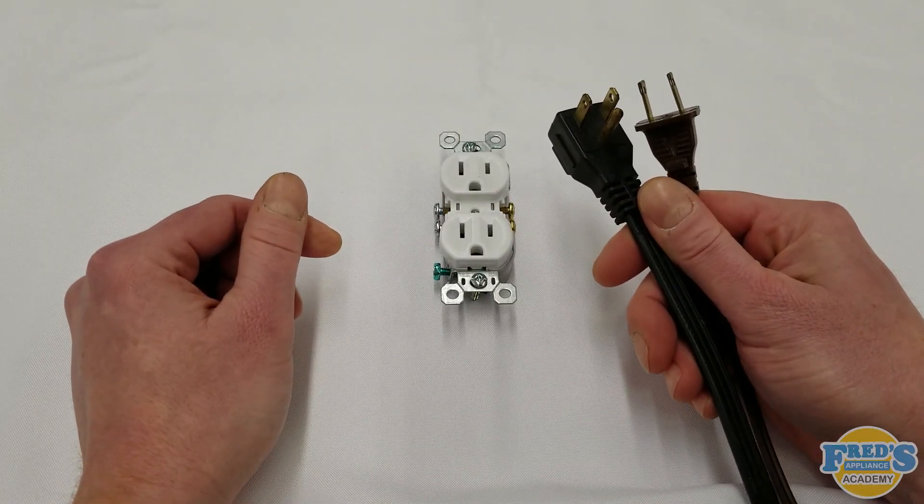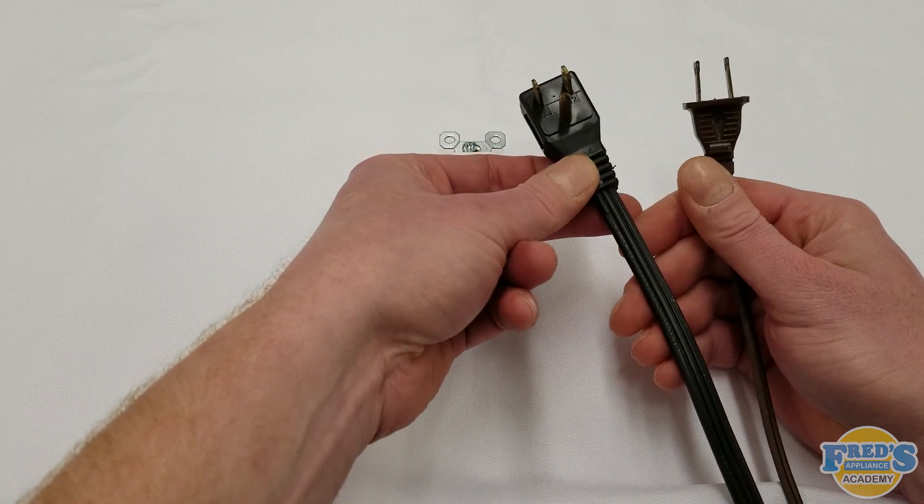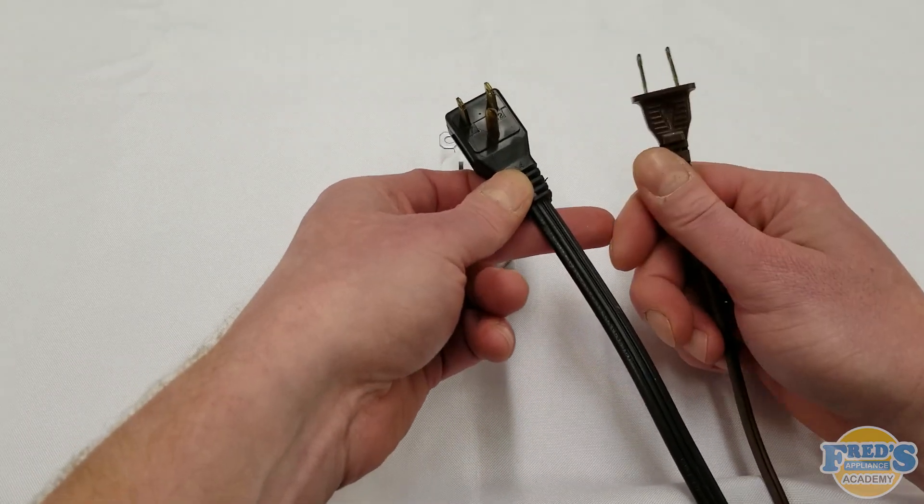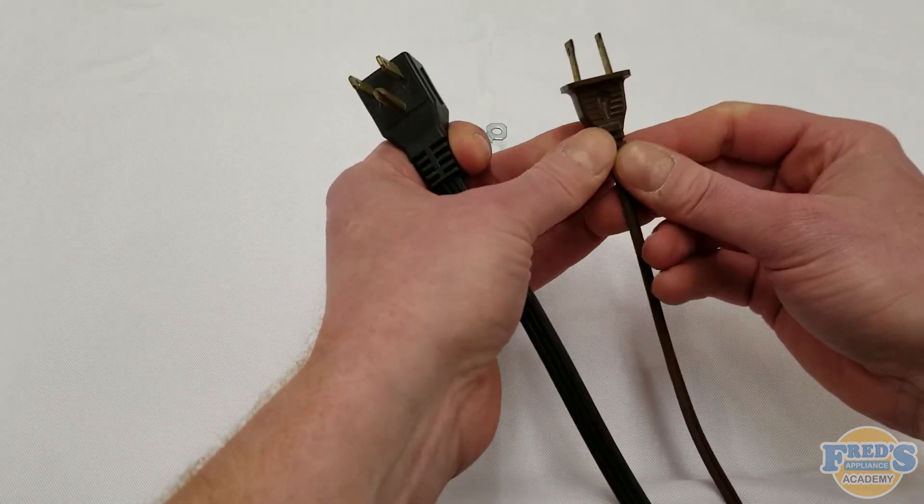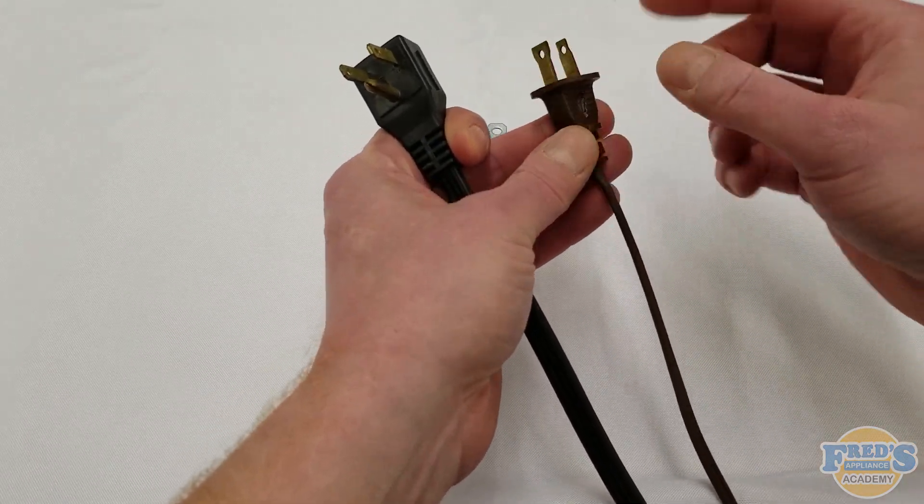The two cords that would pair with this outlet would be your standard three prong as well as the two prong. The three prong is standard because it has a ground on it, whereas we can see the two prong has no ground.